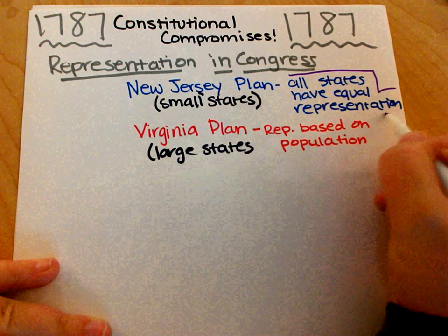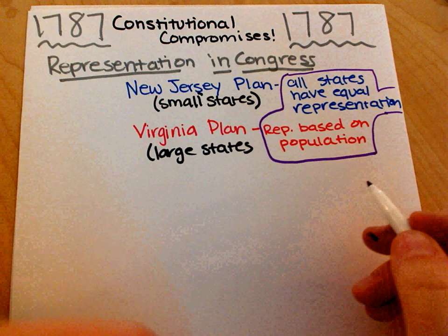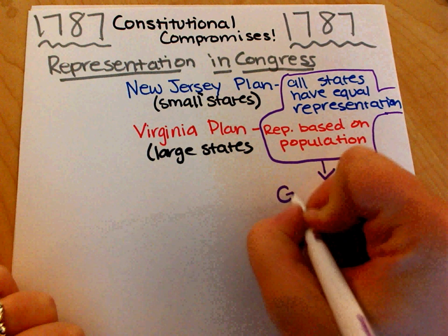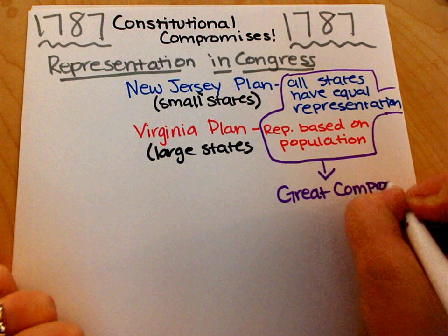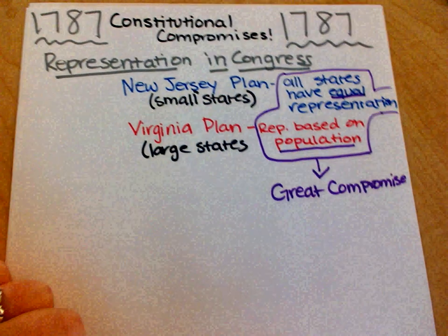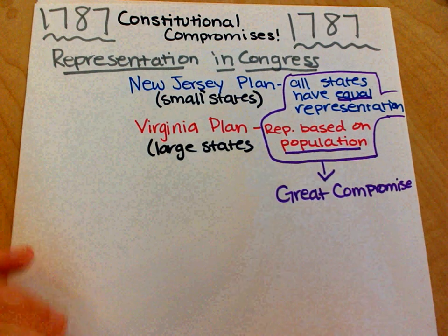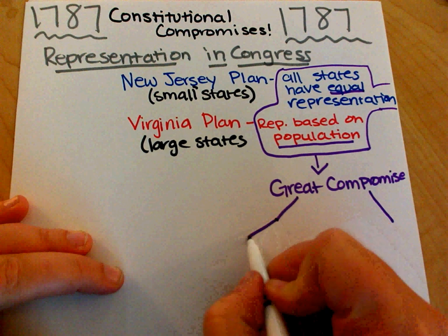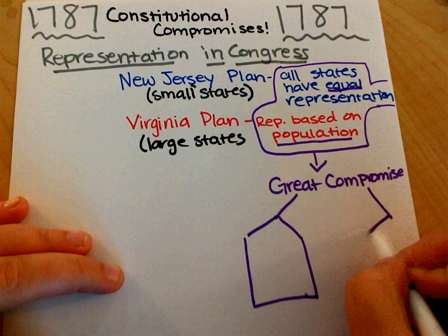So we have these two plans — representation based on population and equal representation — and this is called the Great Compromise. When they combine, they're going to be called the Great Compromise. The Great Compromise is where we decide that our Congress is going to have two houses.